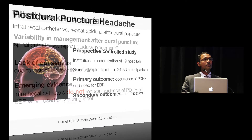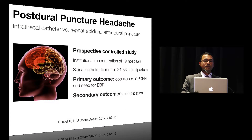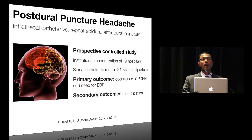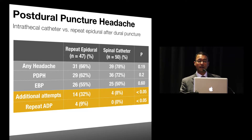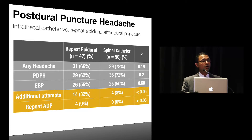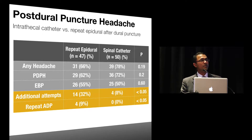The first study is from the United Kingdom by Russell et al., a prospective controlled study involving 19 institutions, with the stipulation that the spinal catheter remain in situ for 24 to 36 hours postpartum. The primary outcome was the occurrence of PDPH and the need for epidural blood patch. Of 97 protocol-compliant women, 50 received a spinal catheter and 47 had their epidurals resited after accidental dural puncture. Conversion to spinal analgesia did not reduce the incidence of postdural puncture headache, nor did it decrease the need for an epidural blood patch.